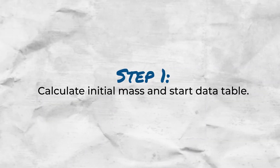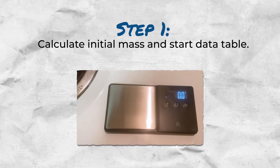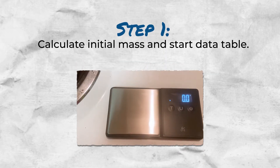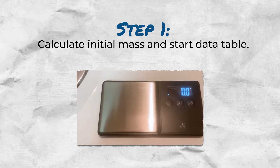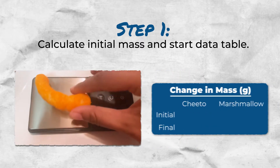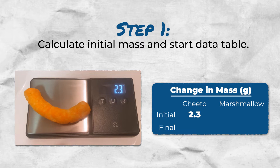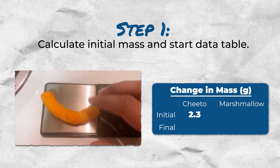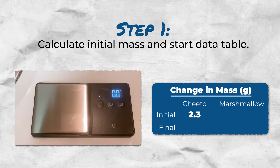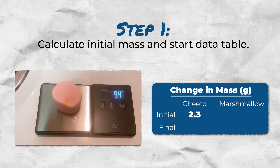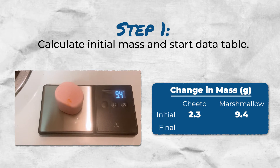To see how many calories the food items have burned, we first have to measure how much they weigh initially — before we set them on fire. We zero the scale, then place the Cheeto puff: that's about 2.3 grams. We record that in our data table under initial mass. Then we put on the marshmallow, which reads 9.4 grams.